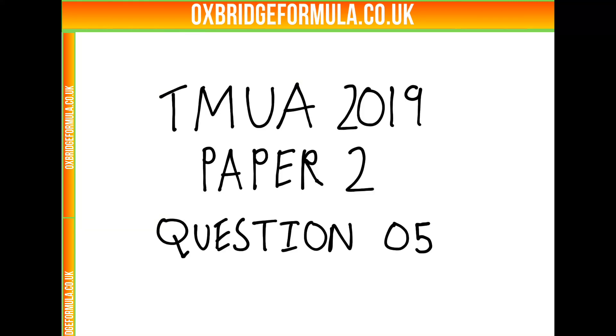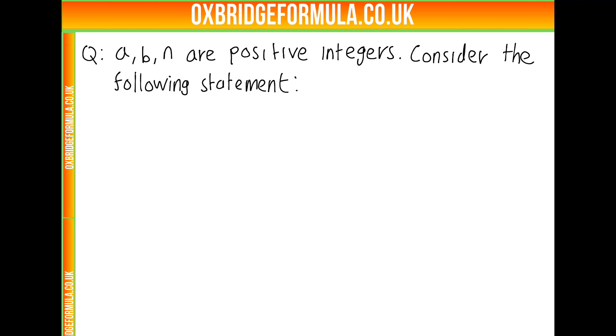This is the solution video for question 5 from paper 2 of the 2019 TMUA or CTMUA exam. In this question, we're told A, B and N are all positive integers. I'm asked to consider the following statement.